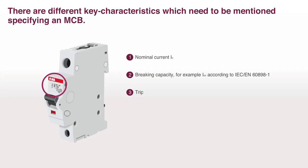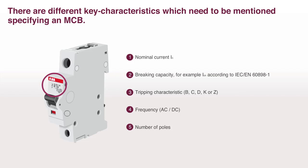Tripping characteristic: B, C, D, K, or Z. Frequency: AC or DC. Number of poles.